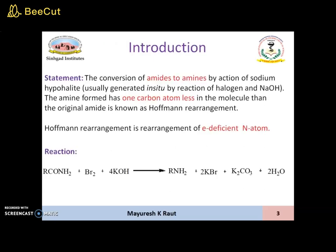What is Hoffman Rearrangement? In Hoffman Rearrangement, there is conversion of amides to amines by action of sodium hypobromite, which is usually generated in situ by reaction of halogen and NaOH. In Hoffman Rearrangement, the product has one carbon atom less in the molecule than the original amide. Hoffman Rearrangement is a rearrangement of an electron-deficient nitrogen atom, wherein the rearrangement takes place on the electron-deficient nitrogen.